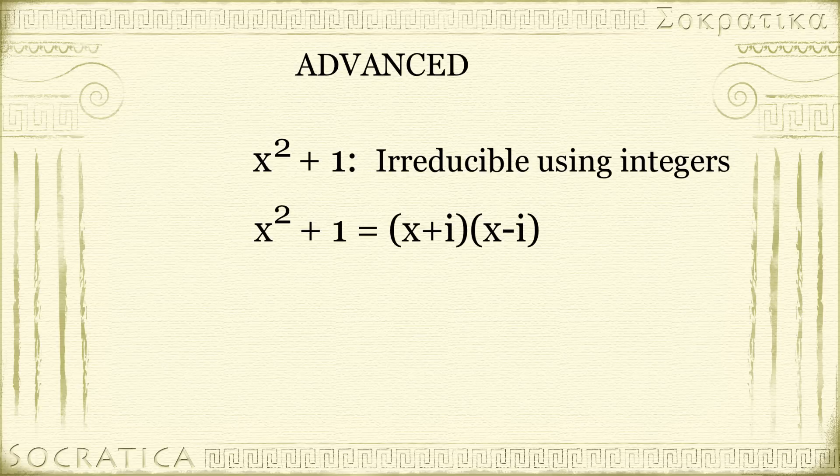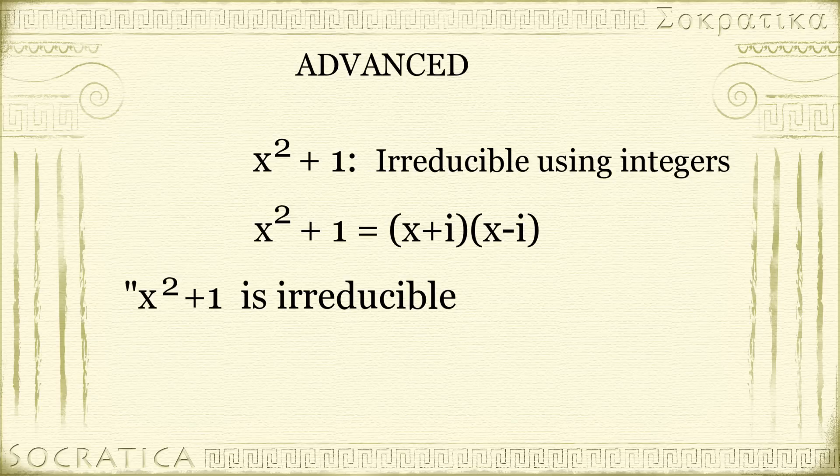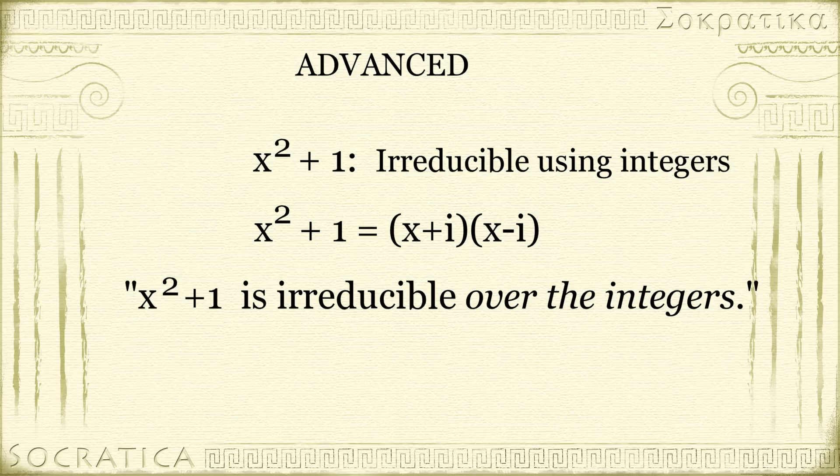So be careful when you say x² + 1 is irreducible. You really should say x² + 1 is irreducible over the integers. Because as we saw above, when you include the number i, you can factor it.